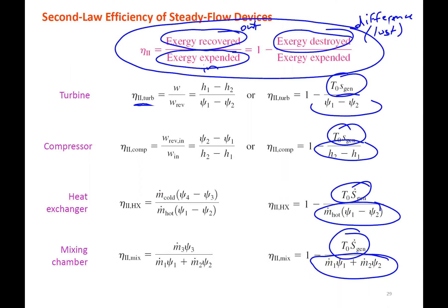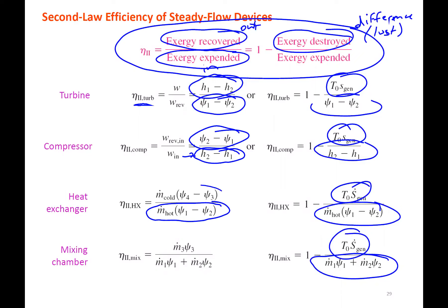For a turbine, if you set up the exergy balance, you would be supplying flow exergy to it and getting work out — that's the exergy recovered, the work potential recovered. For a compressor, you are expending some work, which is related to the change in enthalpy, and you're recovering flow exergy because you're putting energy into the fluid by compressing it. For a heat exchanger, you have exergy in the hot side and it's recovered by the cold side.